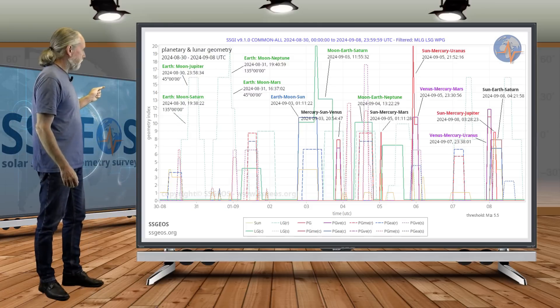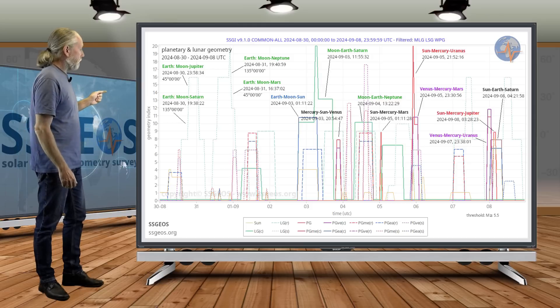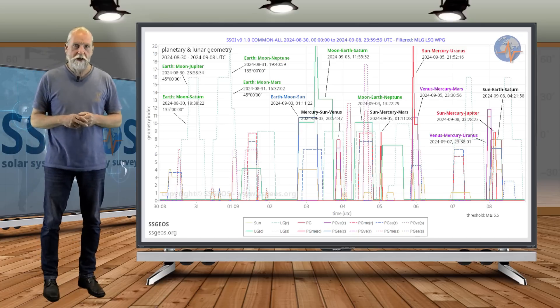We see with Saturn and Jupiter 45 degrees, 135 degrees, and also within 24 hours we see with Neptune and Mars also 45 and 135 degrees, and there could be an obvious seismic response there.